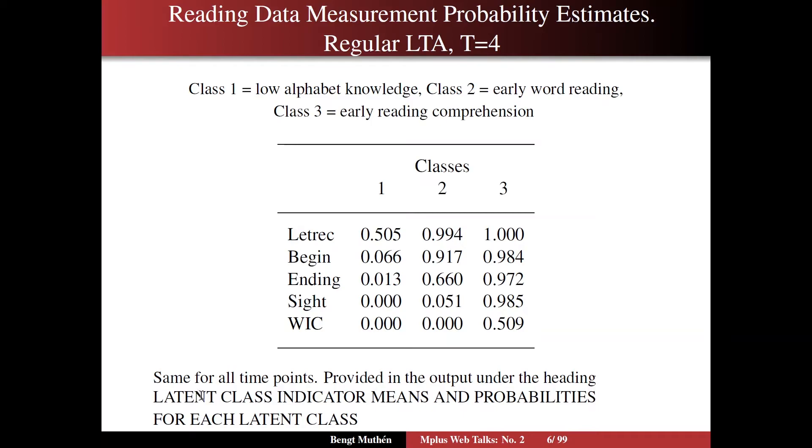Slide six shows the first part that we talked about, the measurement part of the model, and this is derived from an analysis using regular LTA with four time points. We have the three latent classes, and they are the three columns in this table, and the five rows are the five items, the latent class indicators measuring these latent classes. The entries are probabilities, conditional probability of getting letter recognition correct. If you are in class one, it is about a 50% chance of getting that right. If you are in class two, it jumps up to 99%, and in class three, it is certain that you are going to get that right.